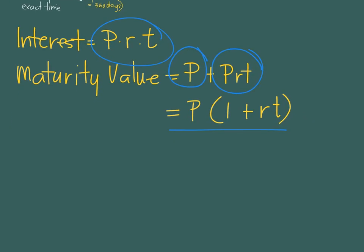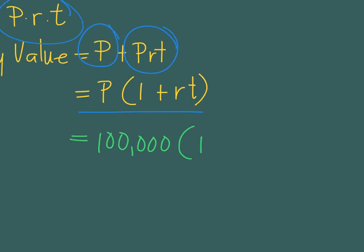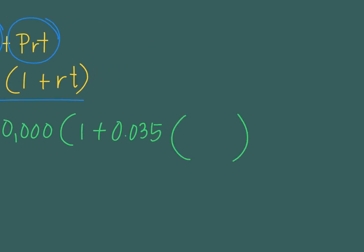Let's show how to solve the problem. The maturity value is P — the principal amount, 100,000 — times (1 plus R). R is 3.5%, so 0.035. Now for the time, this is where the banker's rule will be used. Since this is just less than a year, we will be computing the value on a fraction of a year, and that means a fraction of 360. If this were not a banker's rule problem, the fraction would be over 365. The banker's rule is applied on a 360-day year.